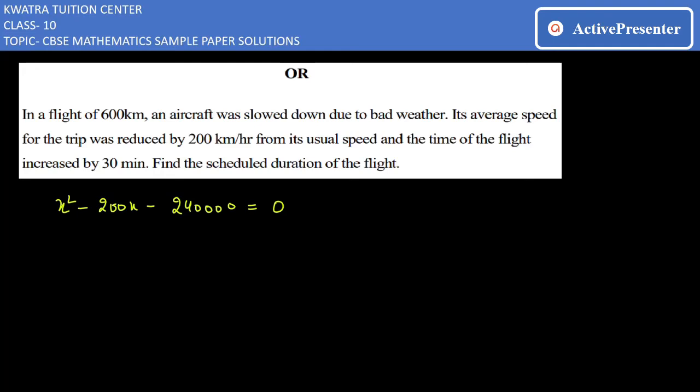Now we can find the value of x by using middle term splitting. We have 240,000, so it will be 600 into 400.